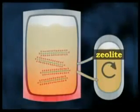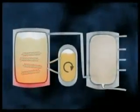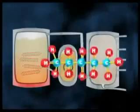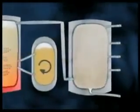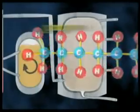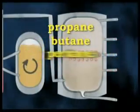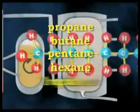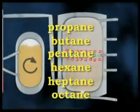Catalytic cracking is the major source of hydrocarbons with 5 to 10 carbon atoms in the chain. The molecules most formed are the smaller alkanes used in petrol, such as propane, butane, pentane, hexane, heptane and octane — the components of liquid petroleum gas.